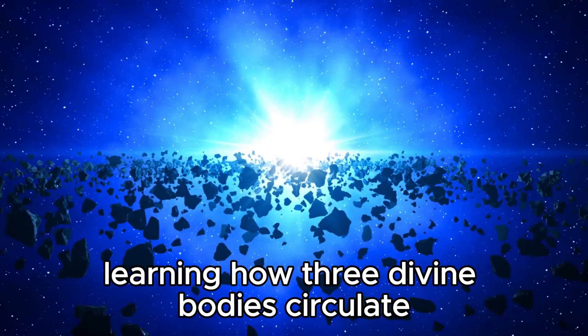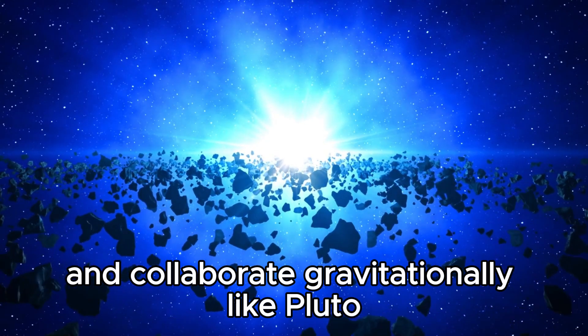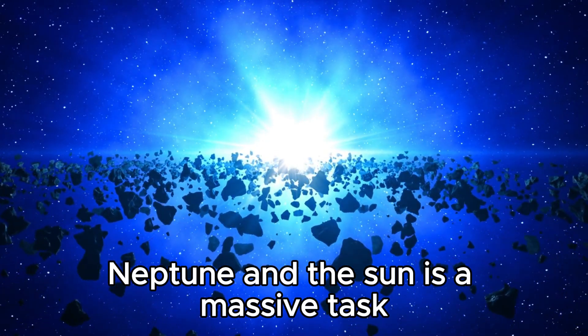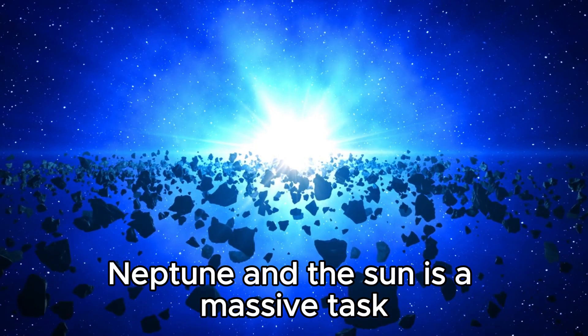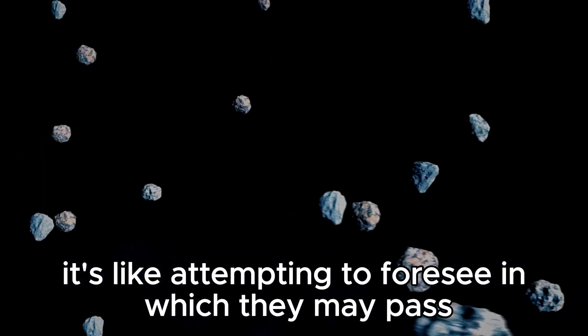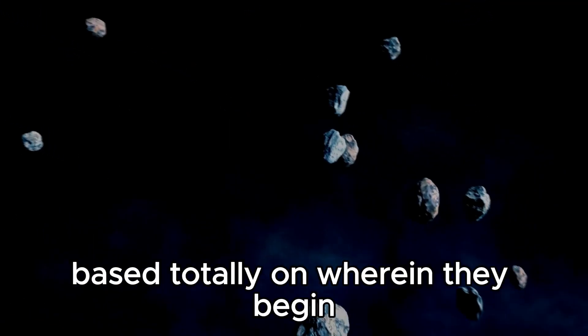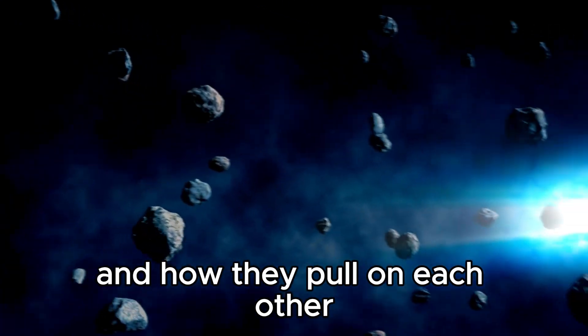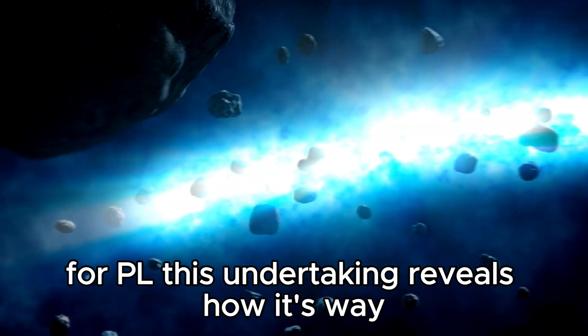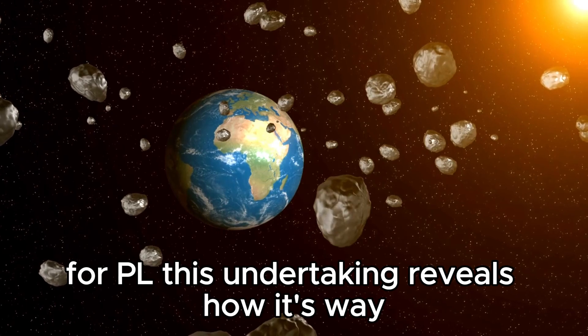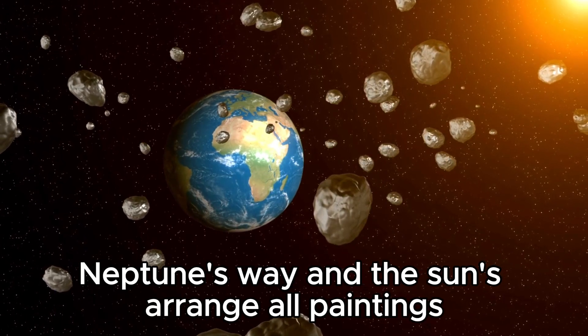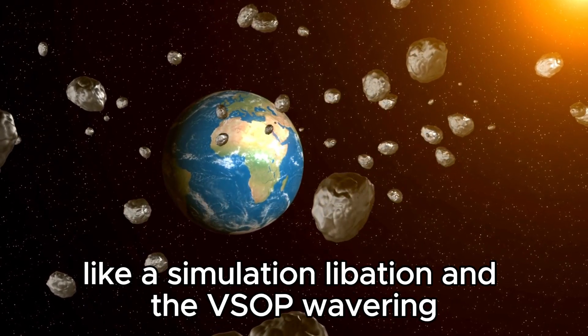Learning how three divine bodies circulate and collaborate gravitationally, like Pluto, Neptune, and the sun, is a massive task. It's like attempting to foresee in which they may pass based totally on wherein they begin and how they pull on each other. For Pluto, this undertaking reveals how its way, Neptune's way, and the sun's arrange all paintings like a simulation.